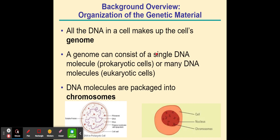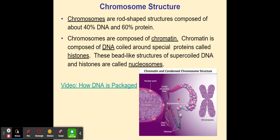All of the DNA in a cell makes up the cell's genome. You get half your DNA from your mom and half from your dad, and together that composes your genome. A genome in prokaryotic cells like bacteria might be a single DNA molecule, but eukaryotic cells may have many DNA molecules. DNA molecules get packaged into chromosomes and we have 46 chromosomes. Chromosomes are actually 60% protein and only 40% DNA. The DNA that makes up chromosomes is called chromatin, which is made up of super-coiled DNA coiled around proteins called histones. Together these bead-like structures are called nucleosomes. I've included a video on how DNA is packaged for you to view.